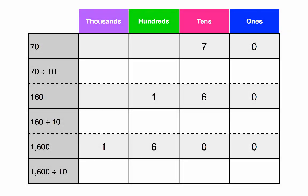Now we're going to divide by 10 using a place value chart. Pause the video and fill out your place value chart. Let's start with 70. 70 is already written in our place value chart with the 7 in the 10s and the 0 in the 1s. Now we're going to divide by 10. How many zeros does 10 have? 1. Exactly! So we're going to move one place value to the right because we are dividing. Notice how the 7 moves from the 10s to the 1s as we divide by 10. 7 times 10 equals 70, so 70 divided by 10 equals 7.